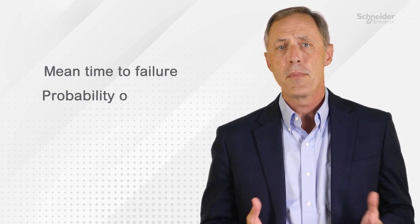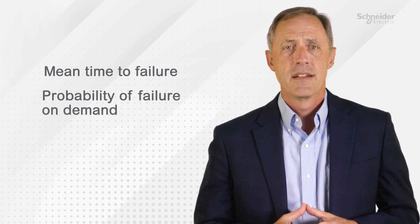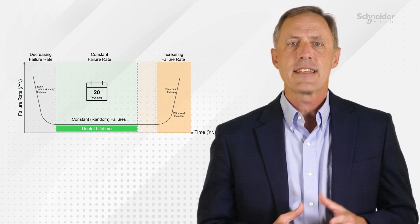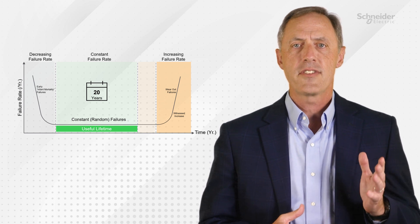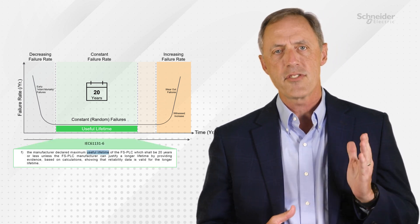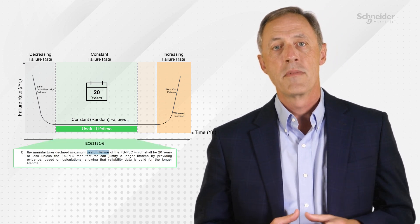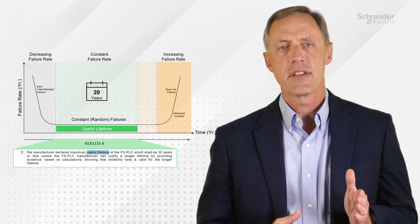Safety-rated PLCs are required to publish failure data such as mean time to failure and probability of failure on demand. These numbers are used as inputs to determine that the safety function meets the level required to mitigate the risk being controlled. IEC 61131-6 states that the useful life of a safety controller is assumed to be 20 years unless stated otherwise.